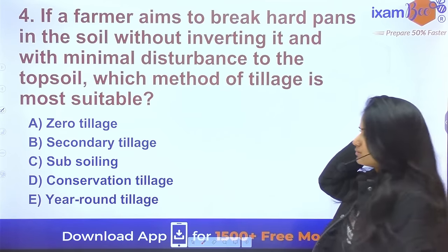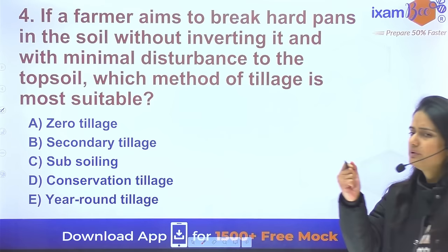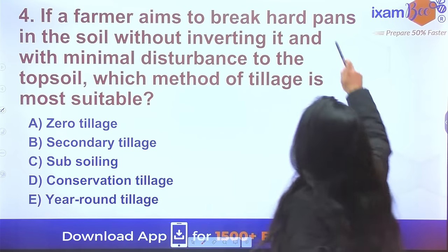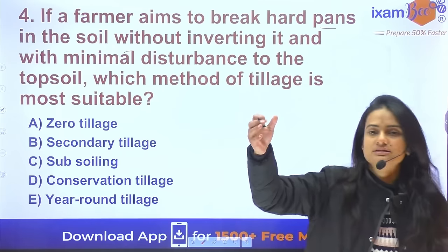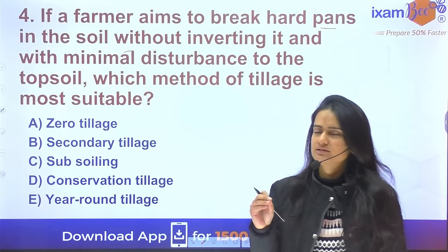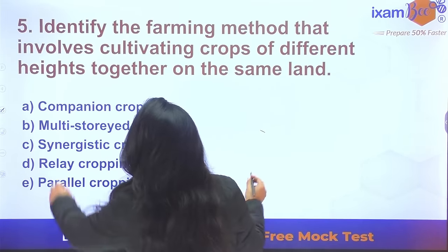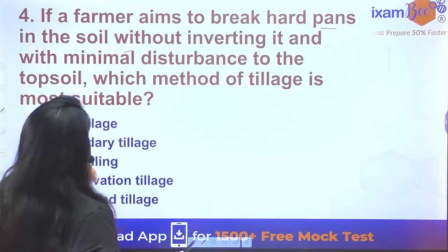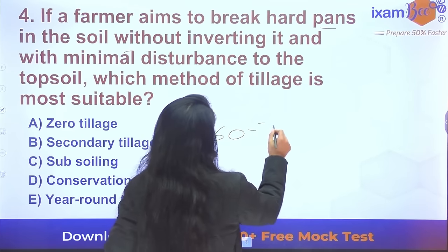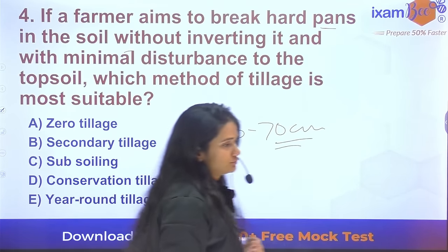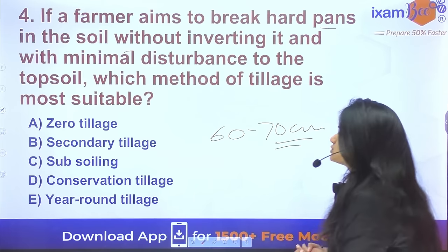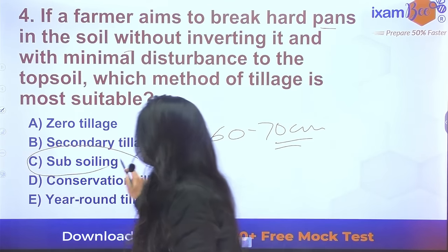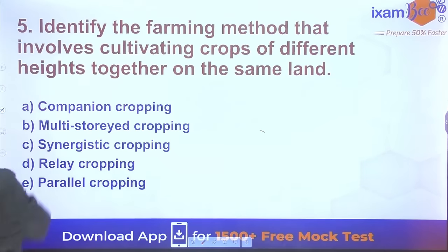Question 4: If a farmer aims to break the hard pans in the soil — hard pan around 60 to 70 cm depth, which can be due to heavy machinery and soil compaction — what do we do? The answer is subsoiling.